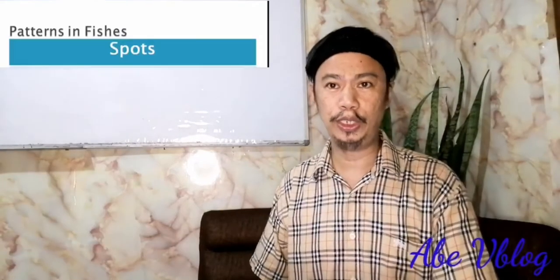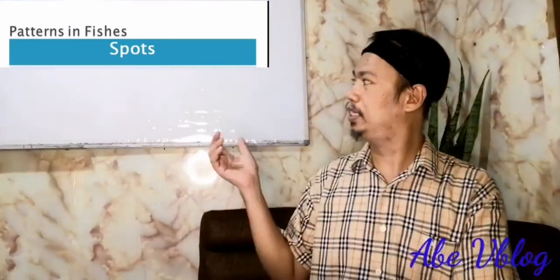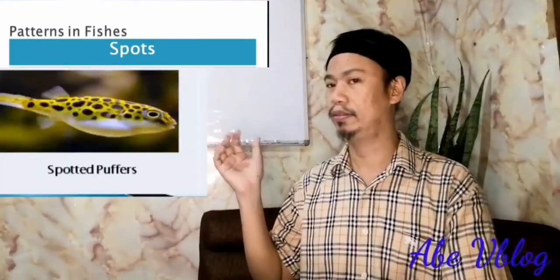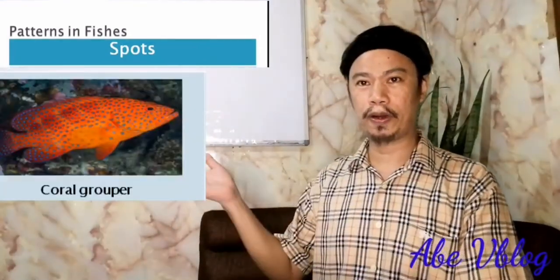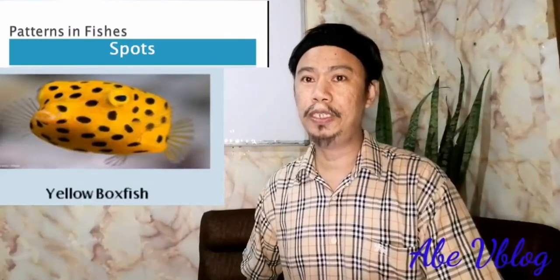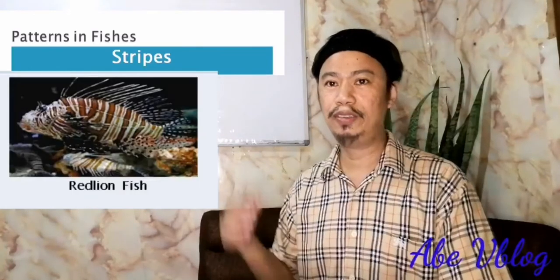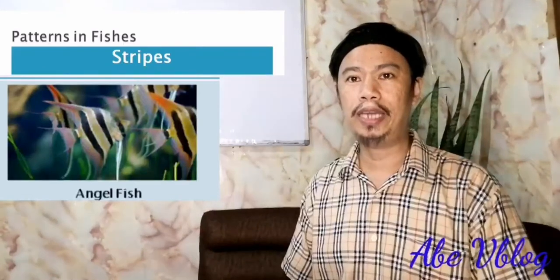Patterns in fishes. We have spotted perch, blue spotted steam rig, spotted buck, spotted moraine eel, yellow grouper, yellow box fish. Patterns in fishes not only on spots. They also have stripes. For example, red lion fish, angel fish, five-stripe rat.